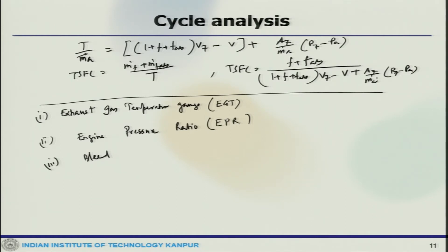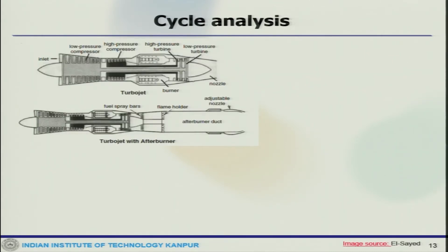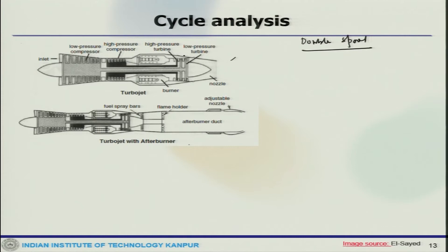Now we move to the double spool turbojet. In the double spool turbojet, we have a low pressure compressor (LPC) and a high pressure compressor (HPC). Similarly, there is a high pressure turbine and a low pressure turbine — connected on single shafts to drive each other.